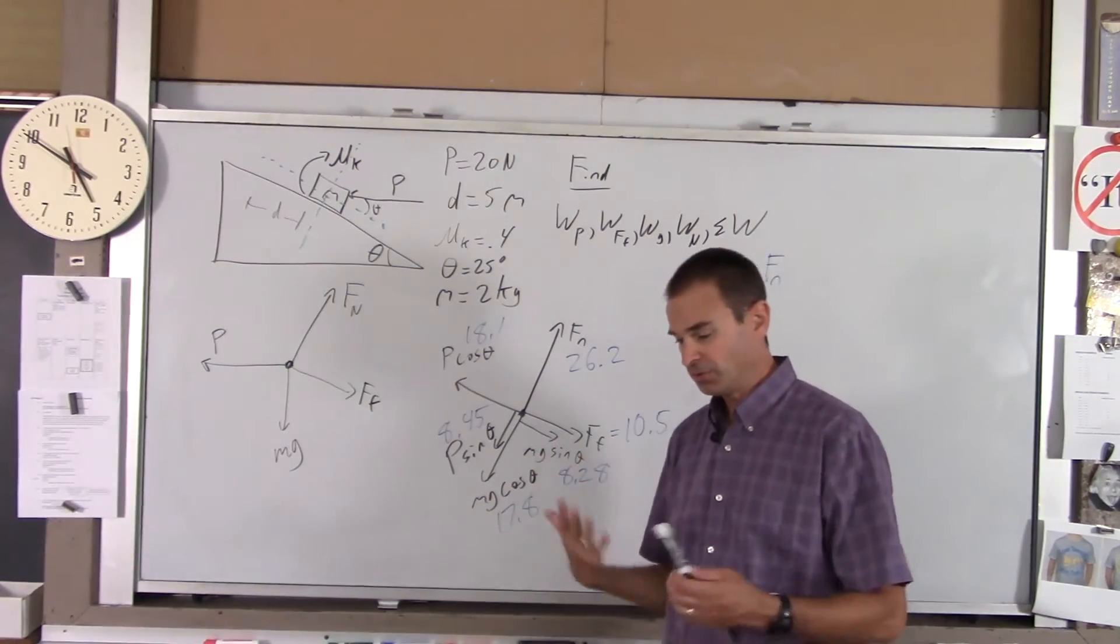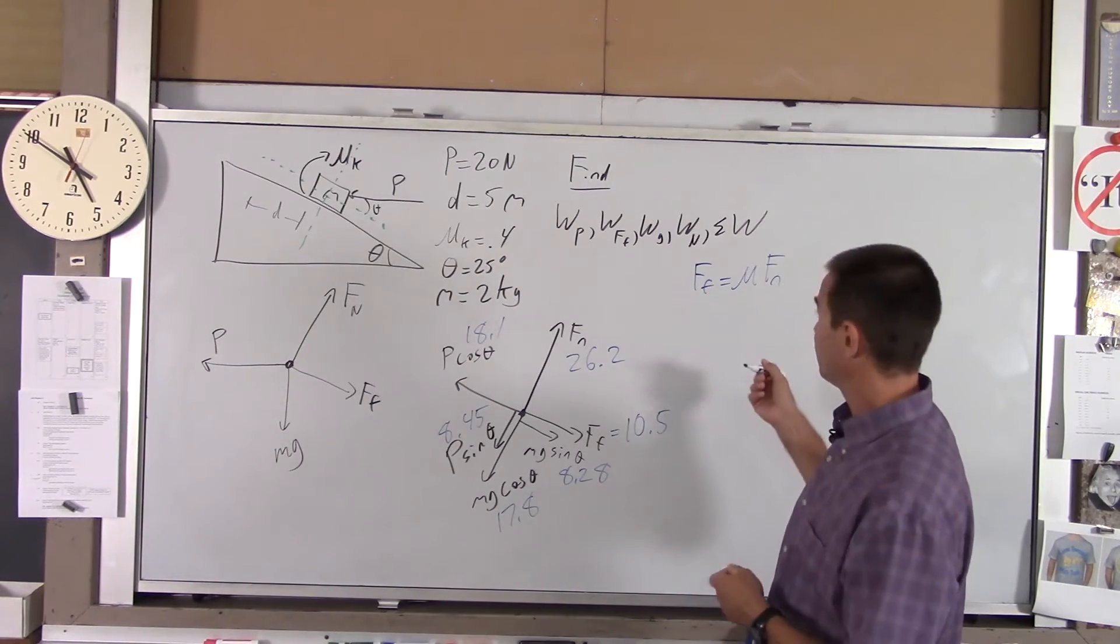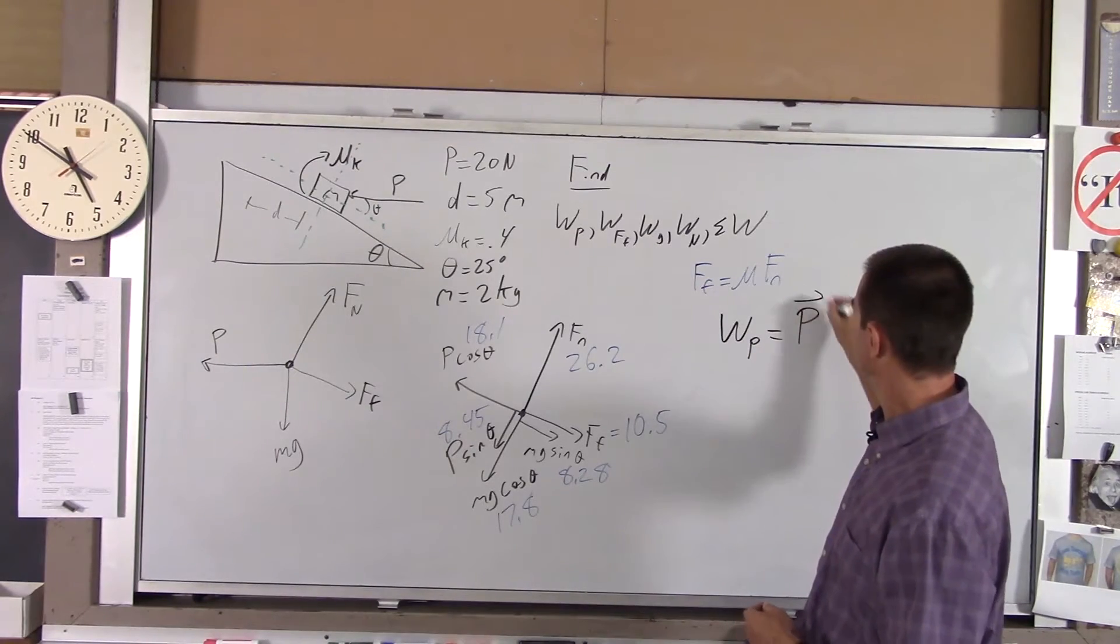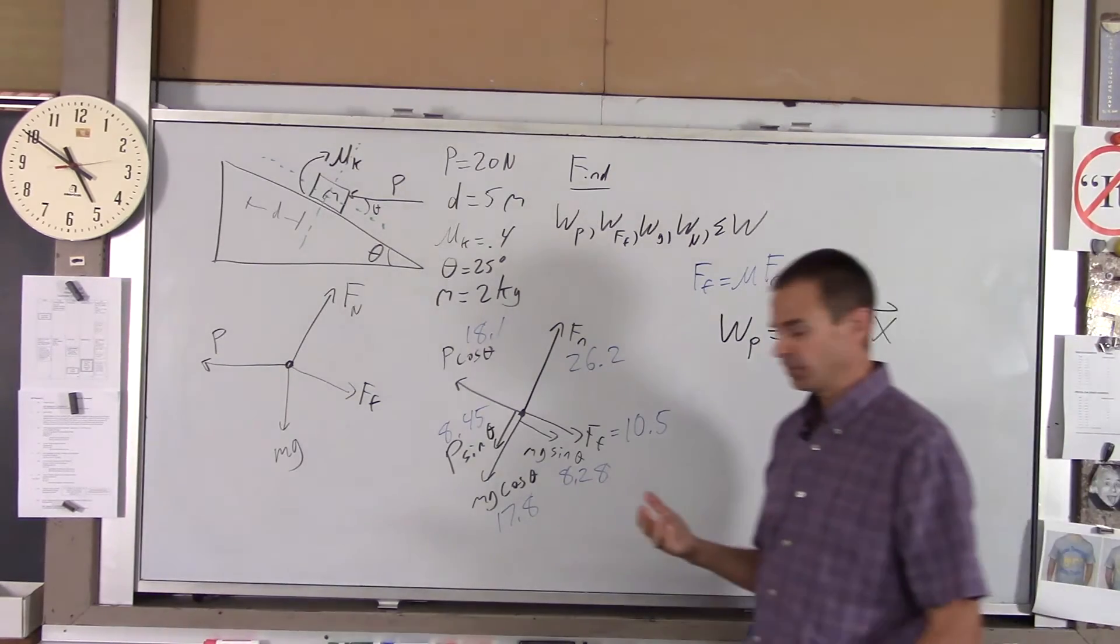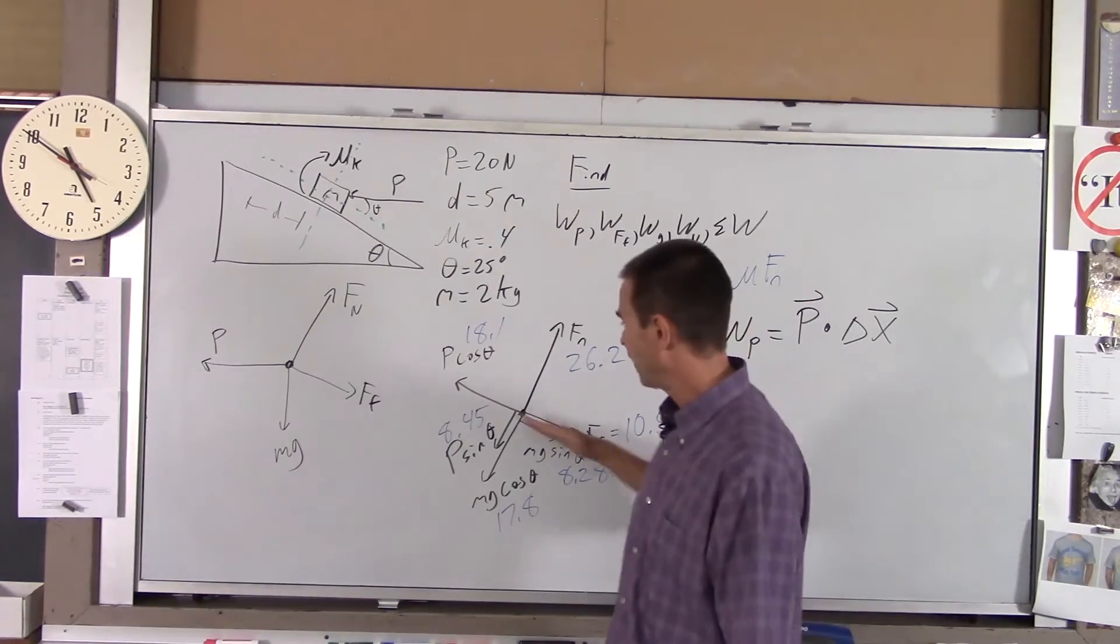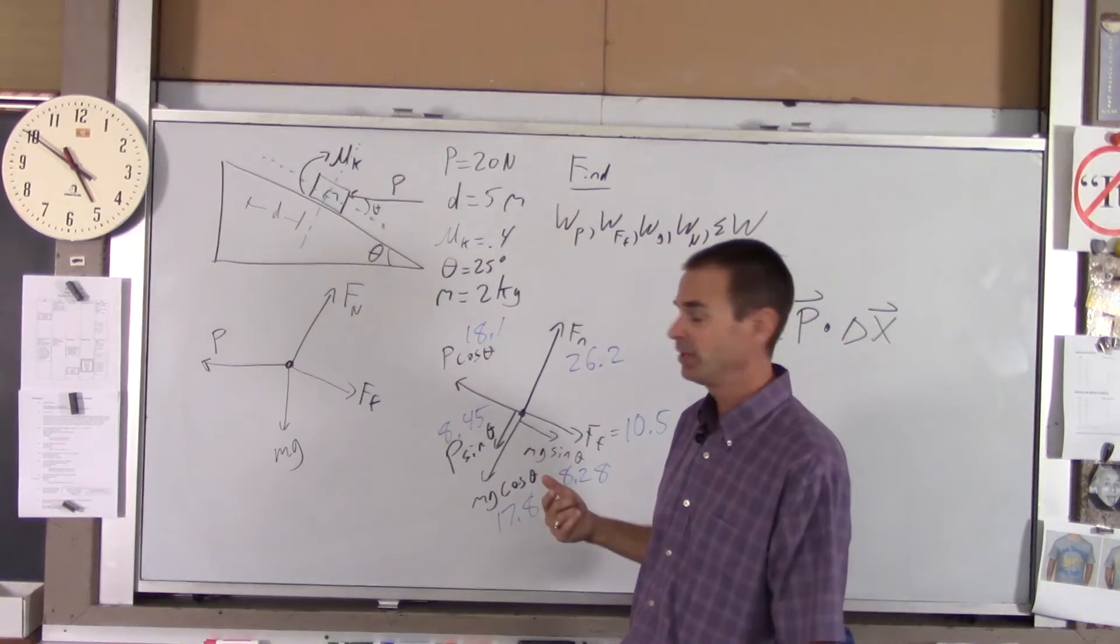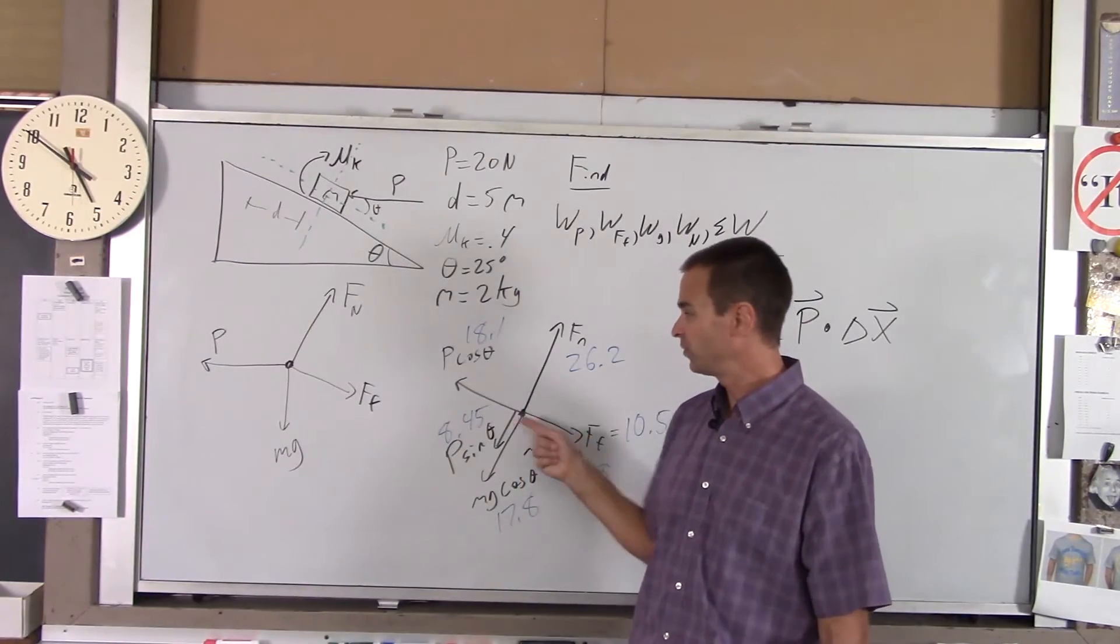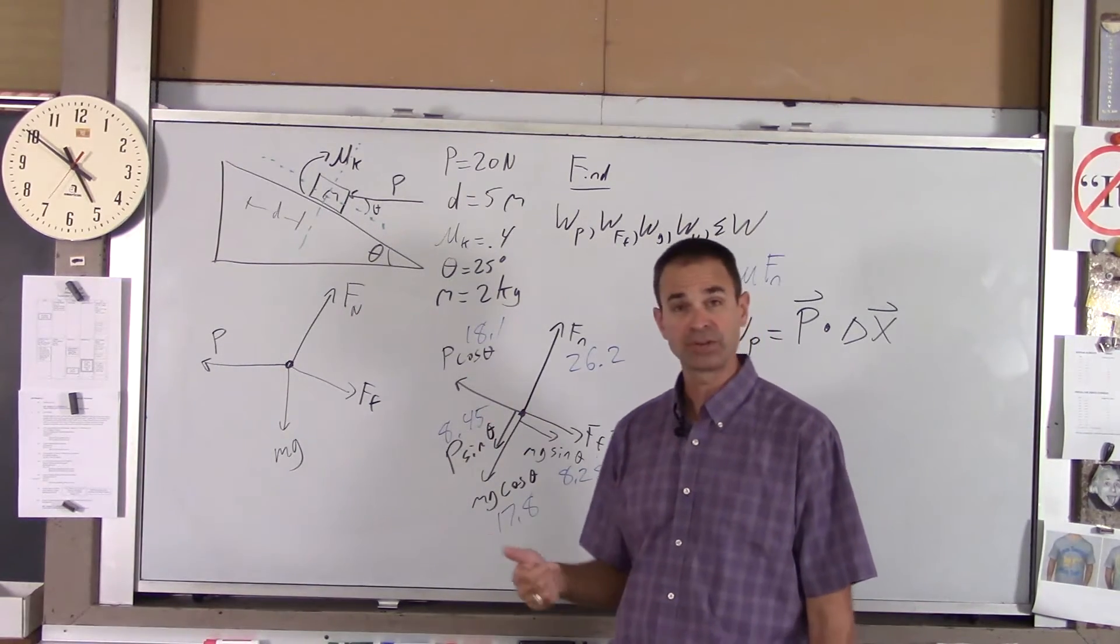To find work done by each force, you just use work is force dot displacement. I'll start with P. The work done by P is P dot displacement. The easy way to do this is to look and see which component of P is parallel to displacement. In this case, we got P cosine theta, that's our parallel component. Is it going to give positive or negative work? Is it in the same direction as the motion or opposite? In this case, it's in the same direction as the motion, so it's going to do positive work.